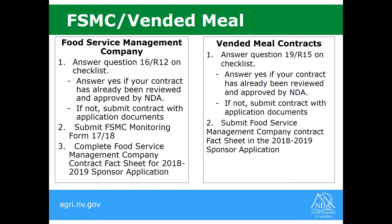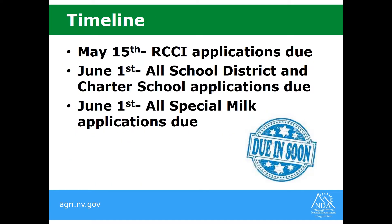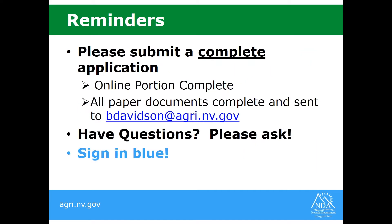The last portion of the application is for those utilizing a food service management company or a vended meal contract. You're going to answer the first question under those sections, which asks if you've already submitted your contracts for approval to NDA. If you answer yes, you're done. If you answer no, you must submit those contracts — either initial or renewal — to NDA for approval with your application documents. For food service management companies, also submit a food service management contract monitoring form, and for both FSMCs and vended meals, submit the food service management company contract fact sheet in your sponsor application under the 2018-19 school year.